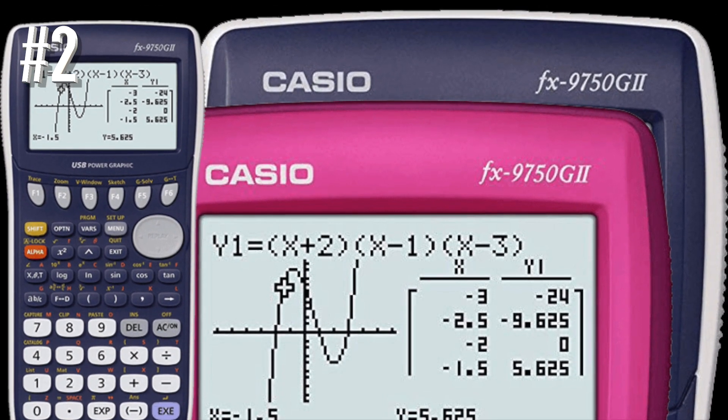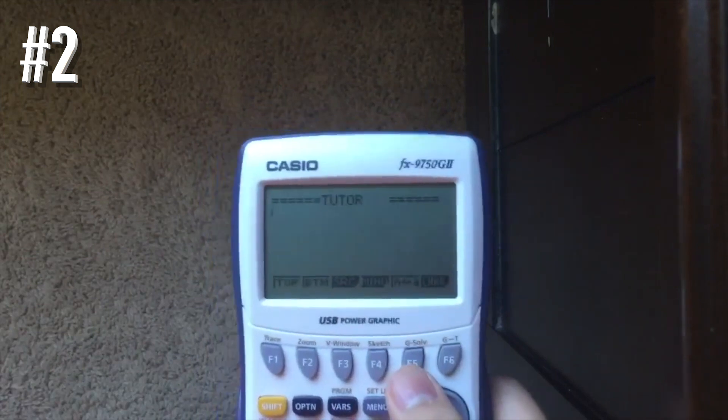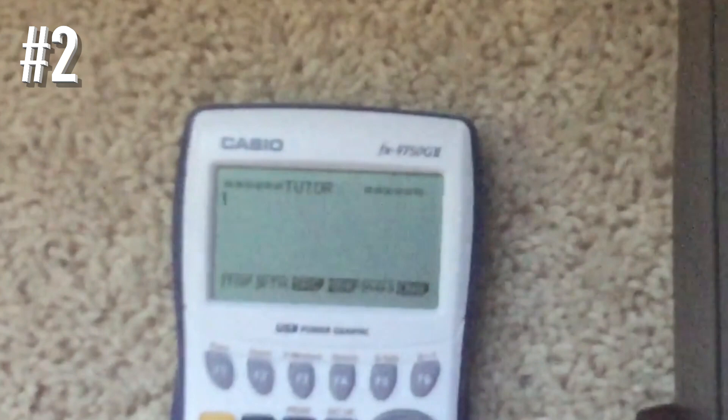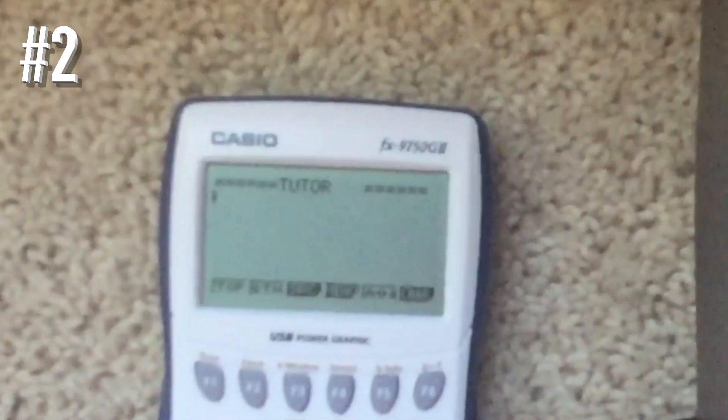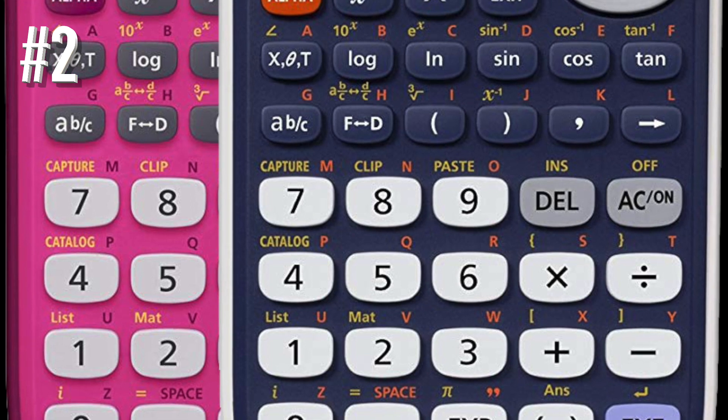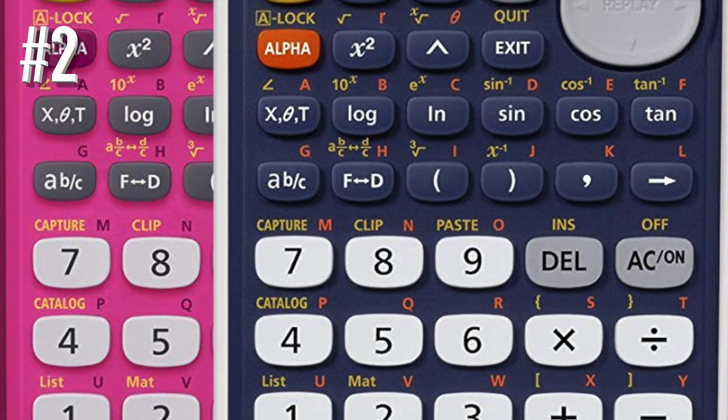Lines and curves are sharp and easier to see and comprehend. The high-speed CPU processes lengthy calculations and complex graphs quickly and accurately, which is essential during test time when every second counts.